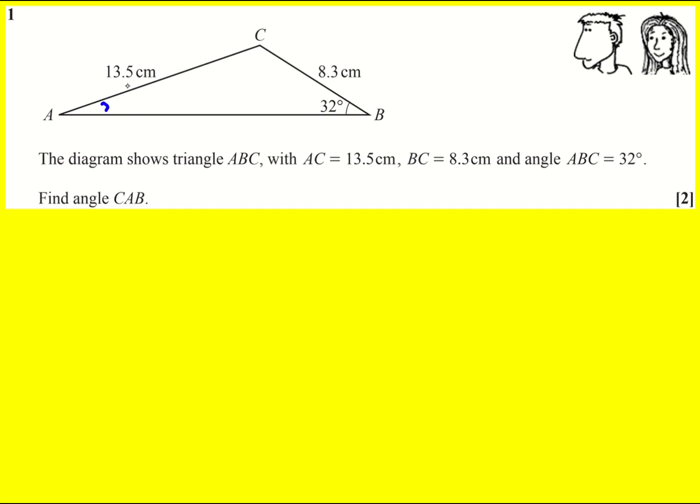I want us to find angle CAB, that's this one here. Now we have an angle side pair and the side and an angle that's unknown, so we can use the sine rule here.